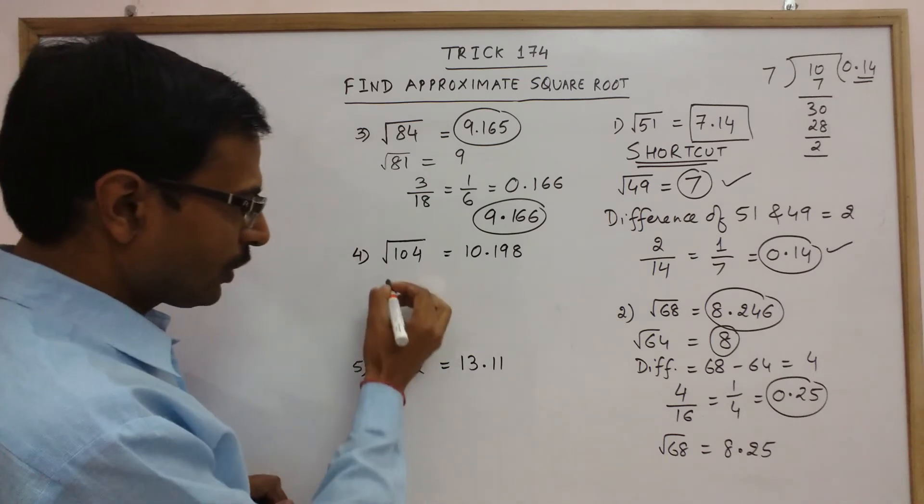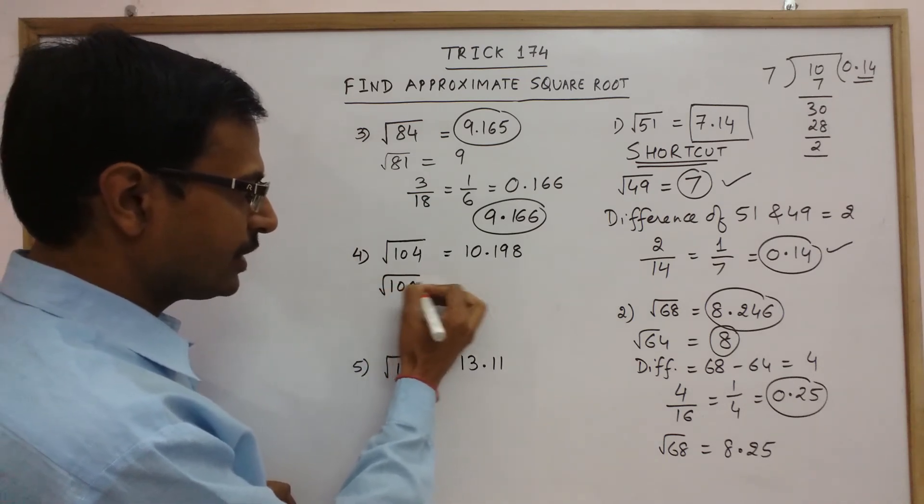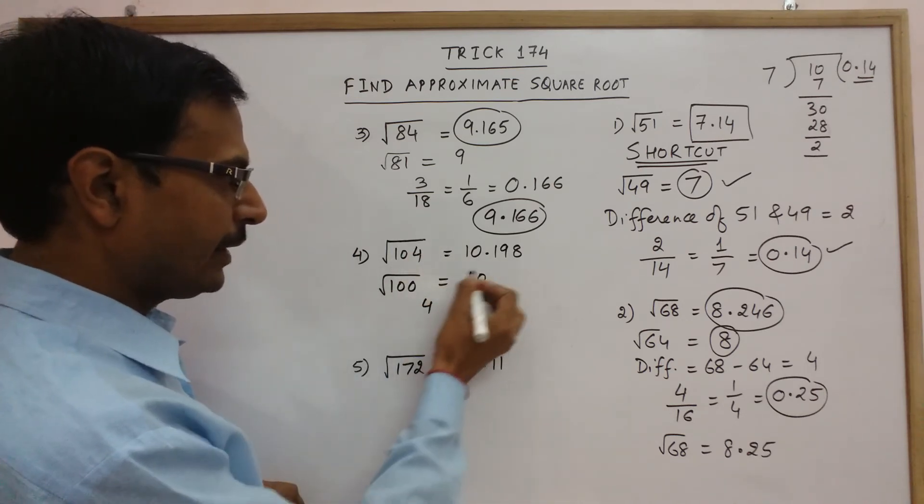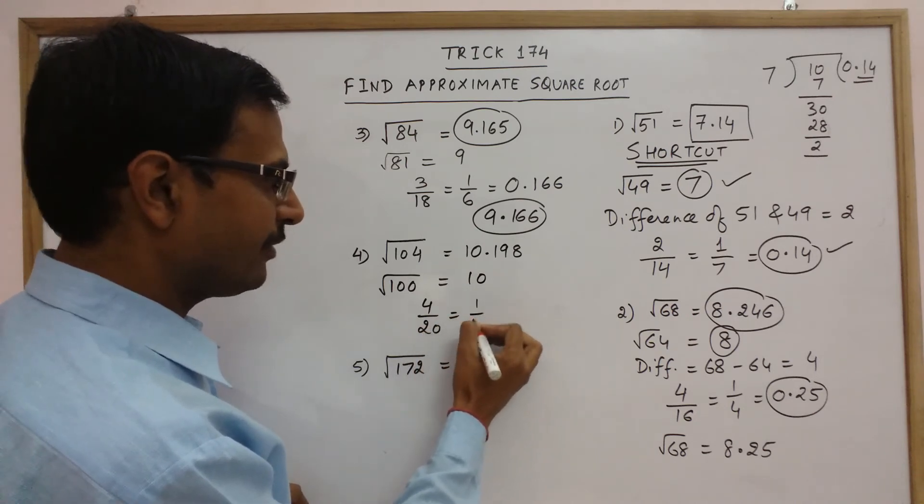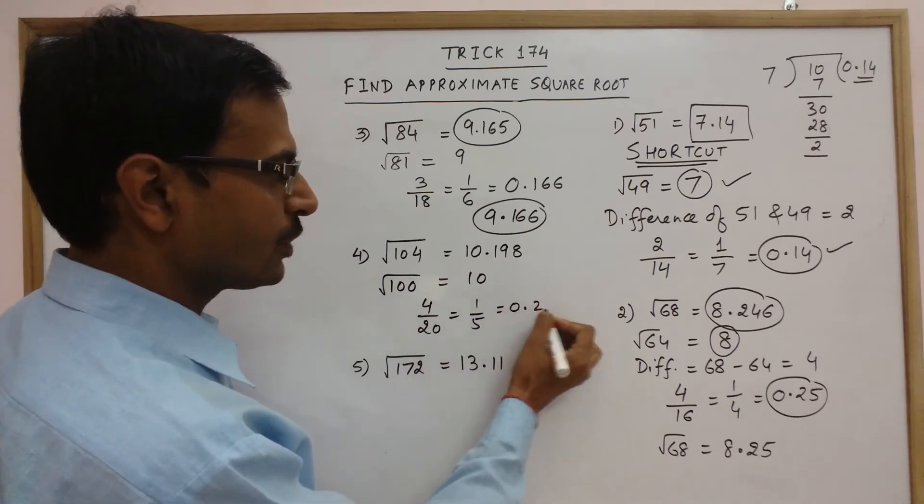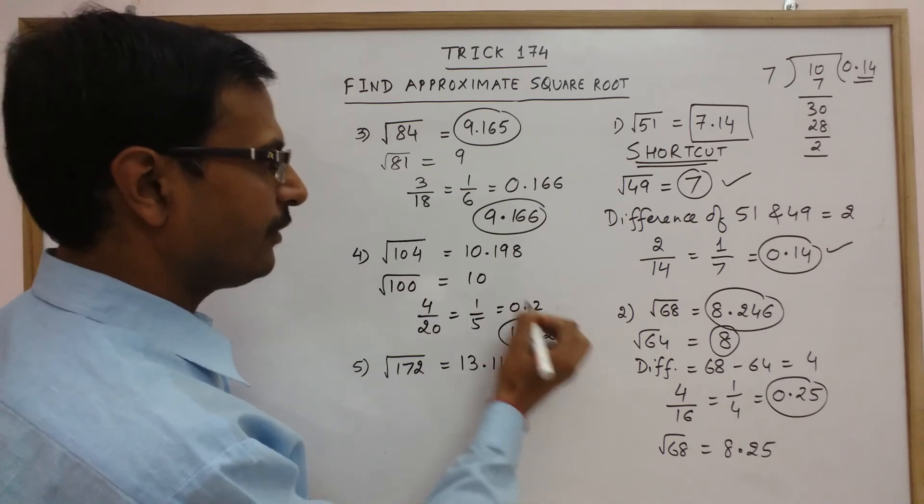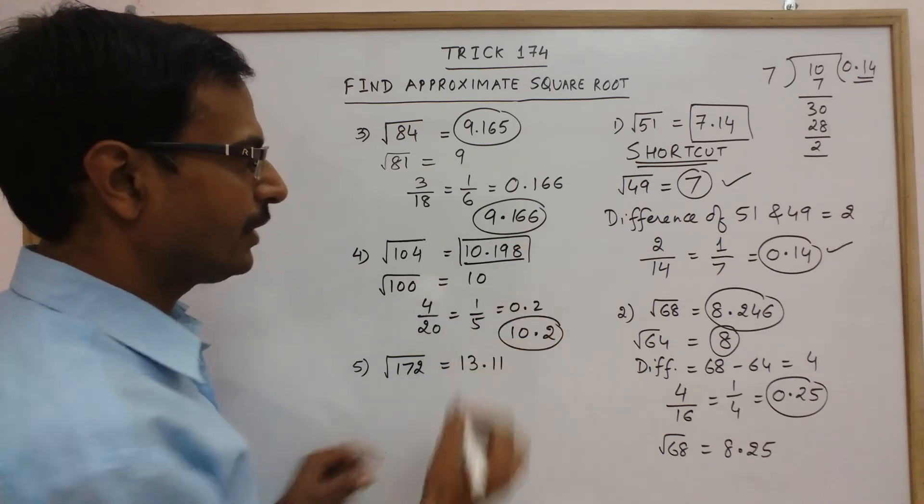Likewise you have under root 104. See square root of 100 is 10. And the difference is 4. 10 double of 10 is 20. So 1 by 5 that is 0.2. So what is your answer 10 and 0.2, 10.2. And if you round this off you will get 10.2 itself.